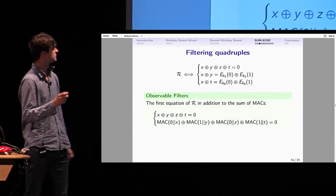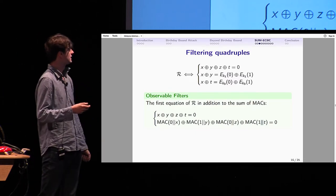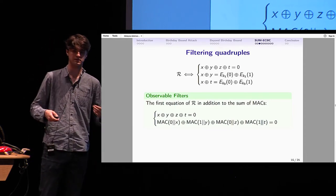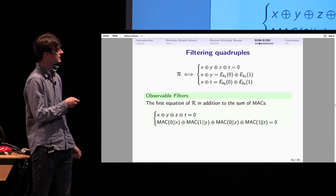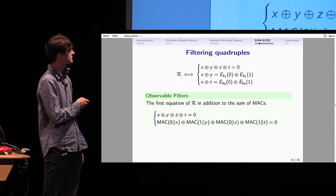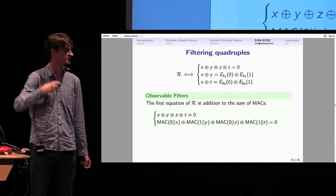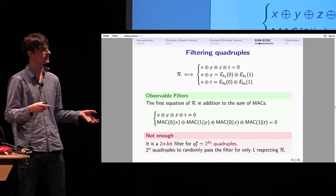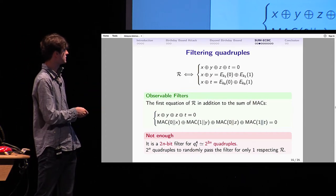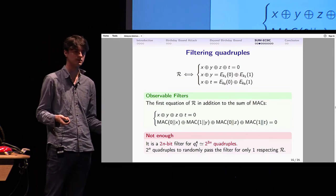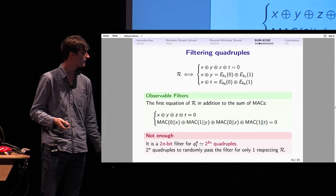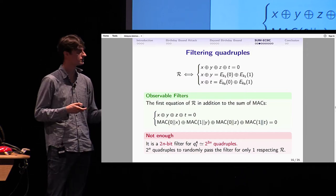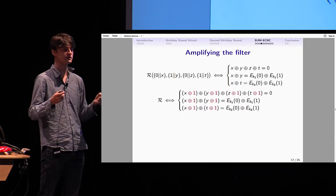So are we done? Not yet. We actually have to find these quadruples. As we know, the relation R will imply that the MACs sum to zero. That's the way to detect it. In the case of SumECBC, if you look at the relation, you can also observe the first equation. So that's X, Y, Z, T sum to 0. But actually, that's not enough. You will have around 2^(3n) quadruples, and that's only a 2n-bit filter. So you expect 2^n quadruples to pass this filter and not respect R anyway. That's a problem.